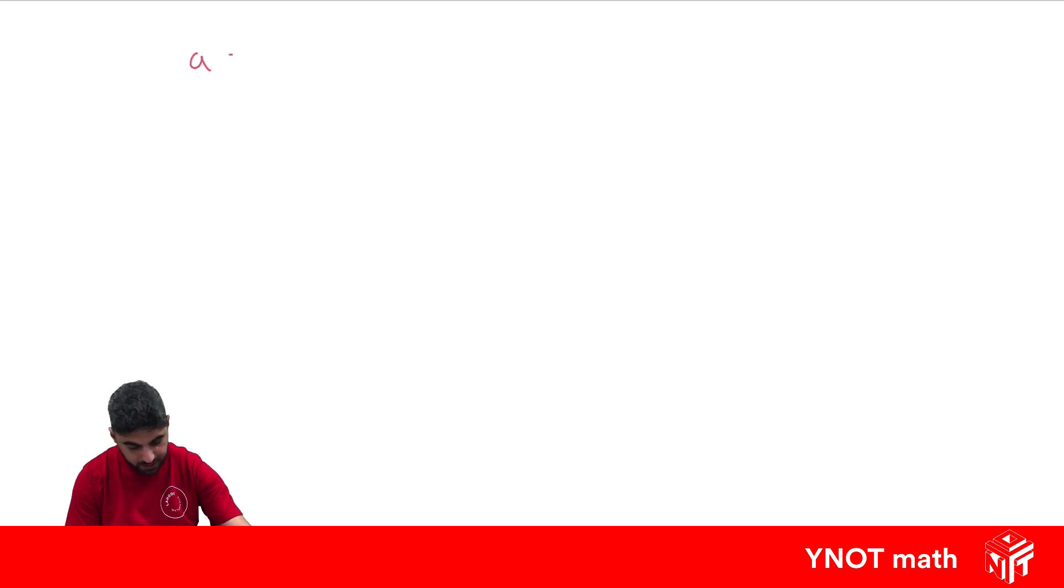If a is equal to 1, b is equal to 2, and c equals 3, how can we find the value of a plus b plus c? What's this value?